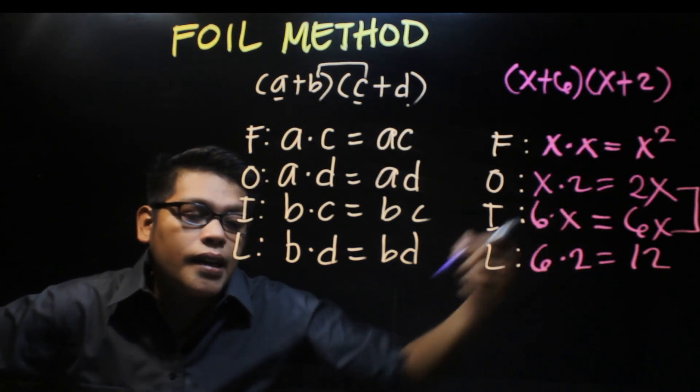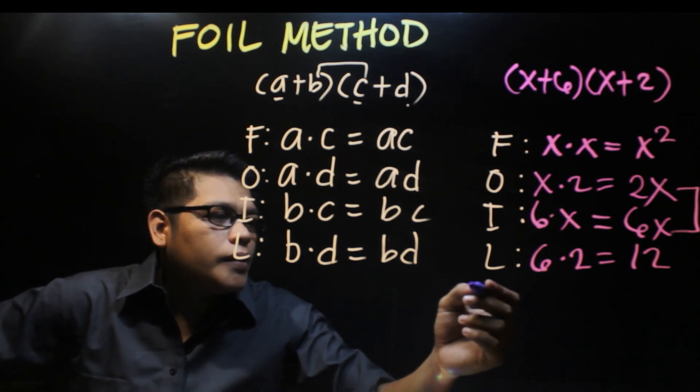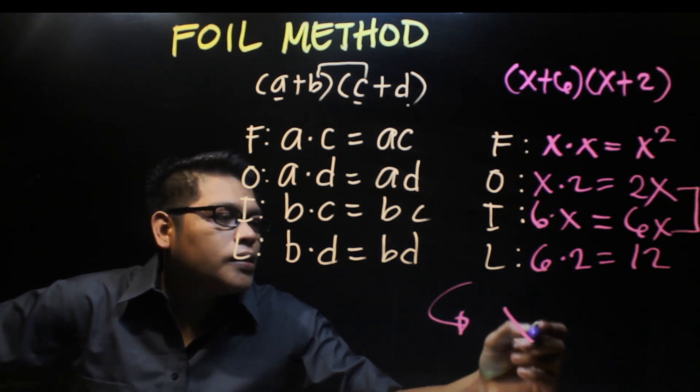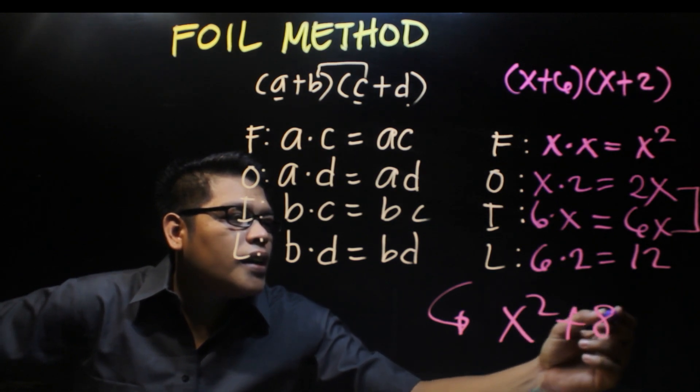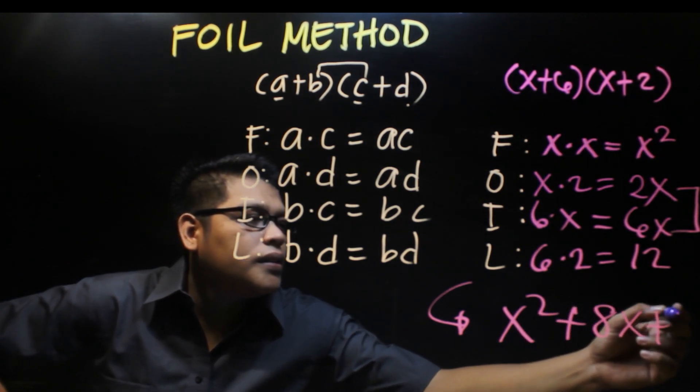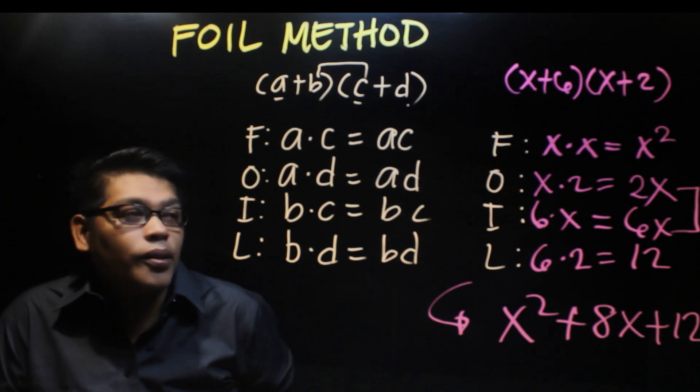The final answer is x² plus 8x plus 12. Using the foil method, we solved (x+6) times (x+2).